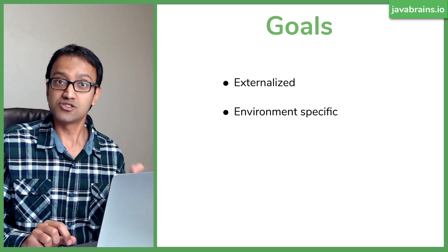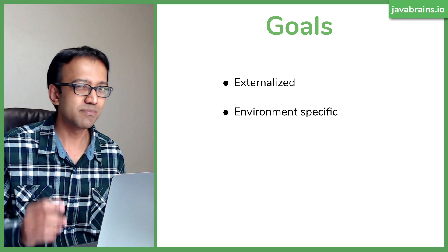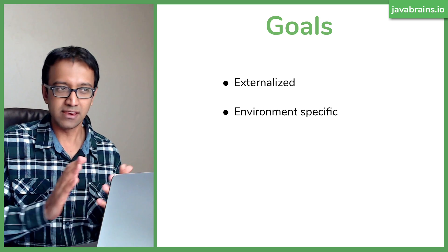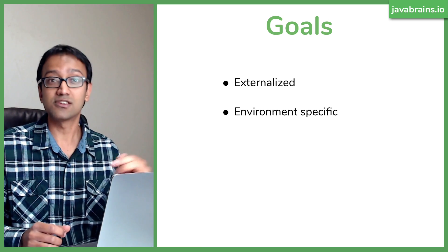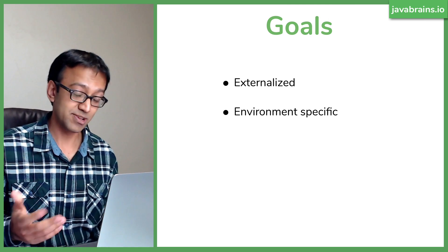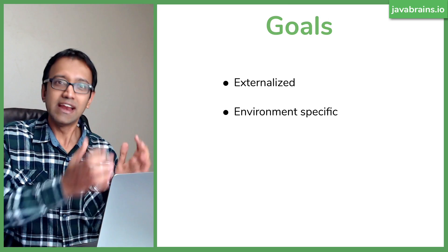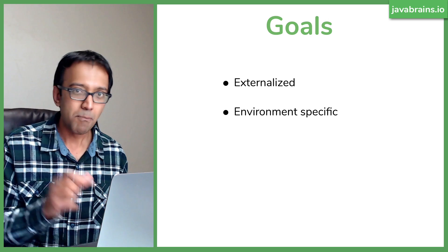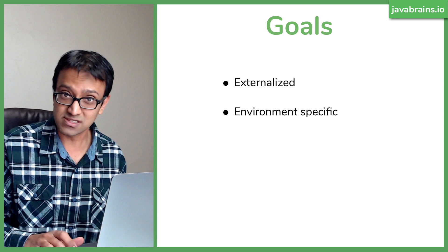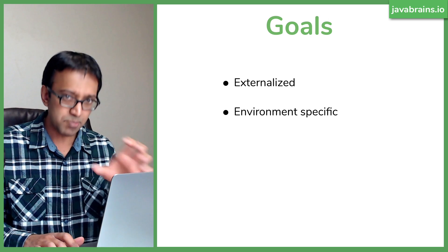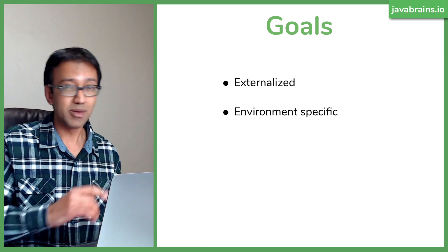The second goal: configuration needs to be environment-specific. Take database connections — your connection string in dev points to the dev database, but the same application deployed to QA needs to connect to the QA or production database. The configuration property is the same, but the value depends on the environment. You need a system that lets you specify values per environment — dev, QA, and prod.